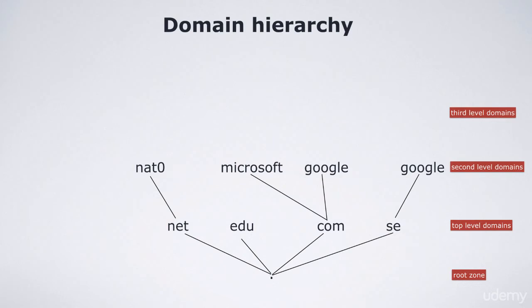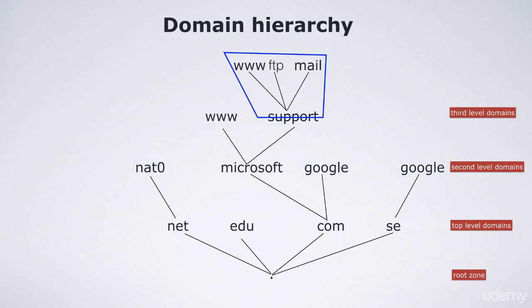Below each second level domain you can have names at a third level. One example is the www record in the domain microsoft.com — this record points to the IP address of the web server responsible for the web page www.microsoft.com. But the third level can also be a delegated domain. Let's say that Microsoft has a specific subdivision named support. This division has their own DNS servers, and the third level domain name is delegated to that DNS server. This means that the DNS server of support.microsoft.com can put their own information as branches below their third level domain without any changes needed in the DNS server responsible for the second level domain microsoft.com.